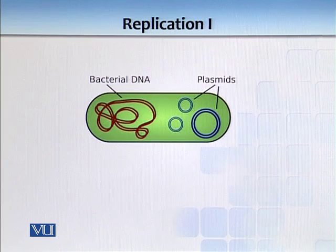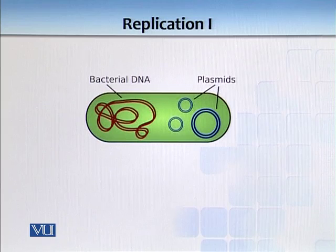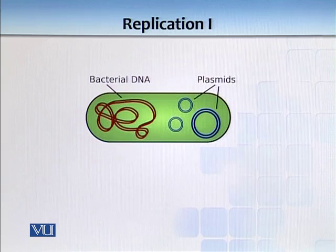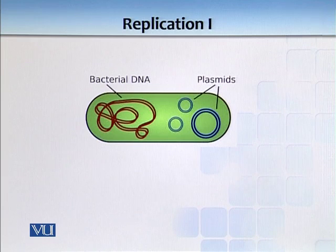The bacterial chromosome — if I open this chromosome, it's not like those X-shaped chromosomes. It's basically a huge circular chromosome. If I open it, it will be a big circle. Or there are small plasmids, which are extra-chromosomal rings that can divide independently as well.